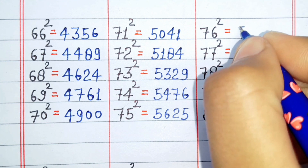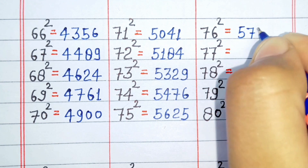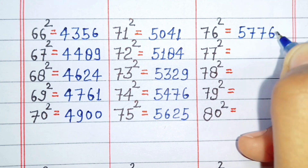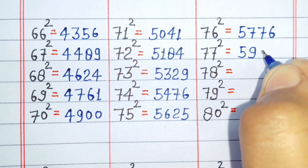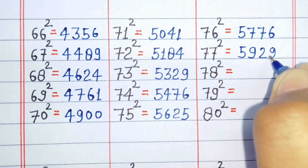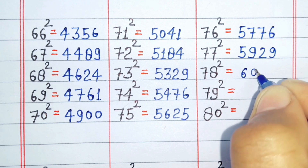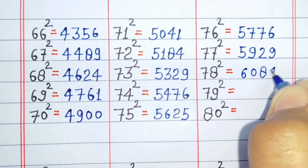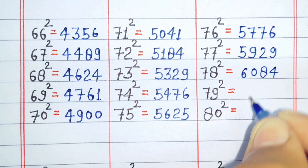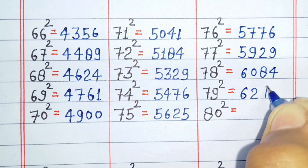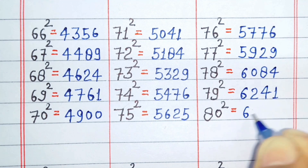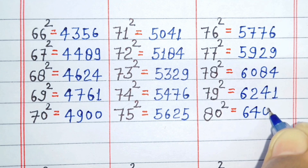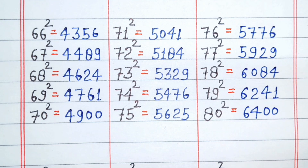Square of 76 is 5776. Square of 77 is 5929. Square of 78 is 6084. Square of 79 is 6241. Square of 80 is 6400.